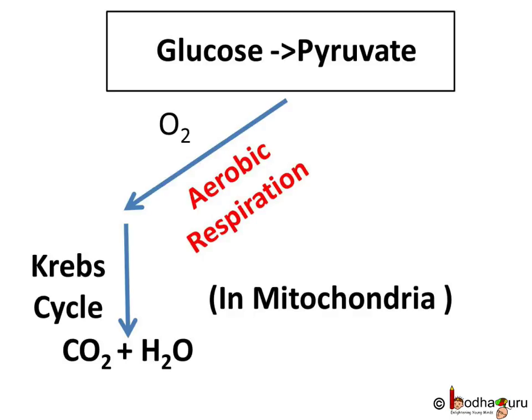If oxygen is available, pyruvate will be broken down into carbon dioxide through a complex process named the Krebs cycle. Huge energy is produced and stored during this long process, which occurs in the mitochondria.